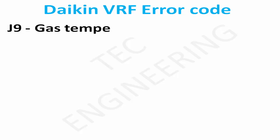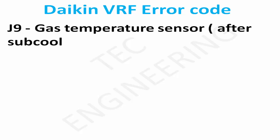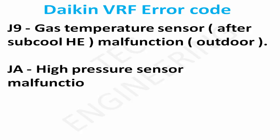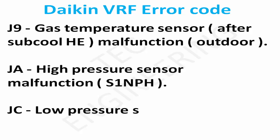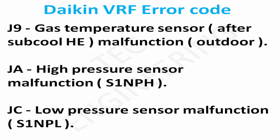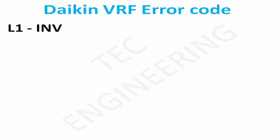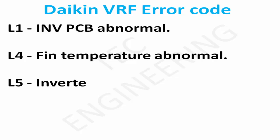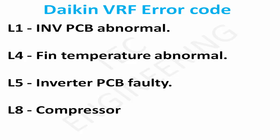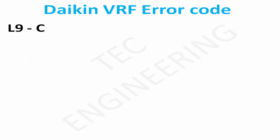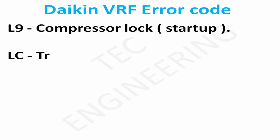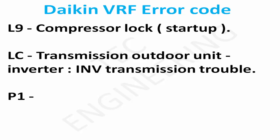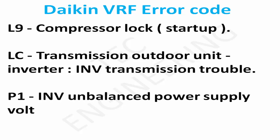J9: Gas temperature sensor after sub-cool HE malfunction, outdoor. YA: High pressure sensor malfunction S1 NPH. JC: Low pressure sensor malfunction S1 NPL. L1: INV PCB abnormal. L4: Fin temperature abnormal. L5: Inverter PCB FOL. L8: Compressor overcurrent detected.